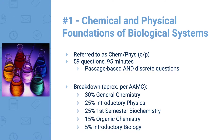The first section is Chemical and Physical Foundations of Biological Systems, generally referred to as Chem-Phys or CP. This section has 59 multiple choice questions and you have 95 minutes to complete them. It's a mixture of passage-based and discrete questions, mainly passage-based. The breakdown is 30% general chemistry, 25% introductory physics, 25% first semester biochem, 15% organic chemistry, and 5% introductory biology.